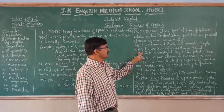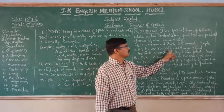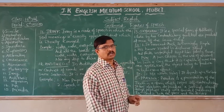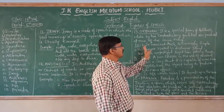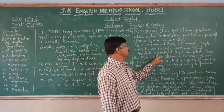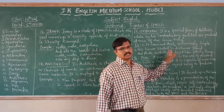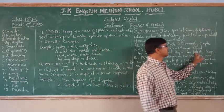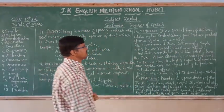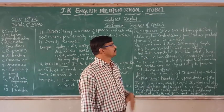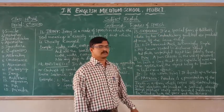Second example: 'His honor rooted in dishonor stood, and faith unfaithful kept him falsely true.' Here, 'faith unfaithful' and 'falsely true' are two contradictory qualities — a special form of antithesis referred to as oxymoron.